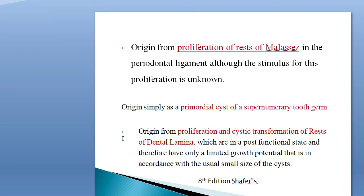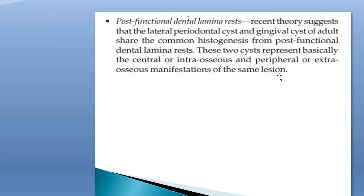This theory — origin from post-functional dental lamina rests — is the most accepted one. Post-functional state means the proper functioning of the dental lamina is over; when the tooth develops and detaches from the dental lamina, the remnants that rest in the jaw or gingival epithelium are called cell rests of Serres. These rests are in a post-functional state, so the lesion is very small in size. This histogenesis from post-functional dental lamina rests is common for both gingival cyst of the adult and lateral periodontal cyst.